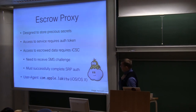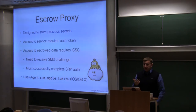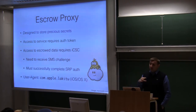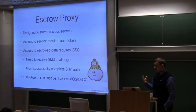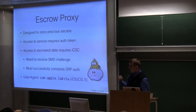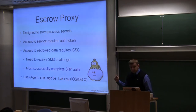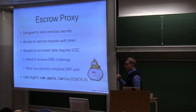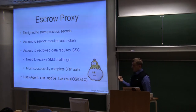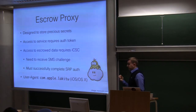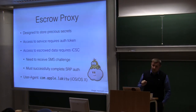The escrow proxy is a new service, likely designed specifically for iCloud Keychain but actually more generic — it can store any number of secret items. Access requires an authentication token, as with all iCloud services: you authenticate with your Apple ID and password, receive an account number and token, and use those to talk to the service. But to actually read data from the escrow proxy, you need an additional level of authentication: an SMS challenge and a Secure Remote Password (SRP) authentication. The user agent running on iOS and OS X for this service is called Lucky2 — a character from Mario Brothers representing a cloud.